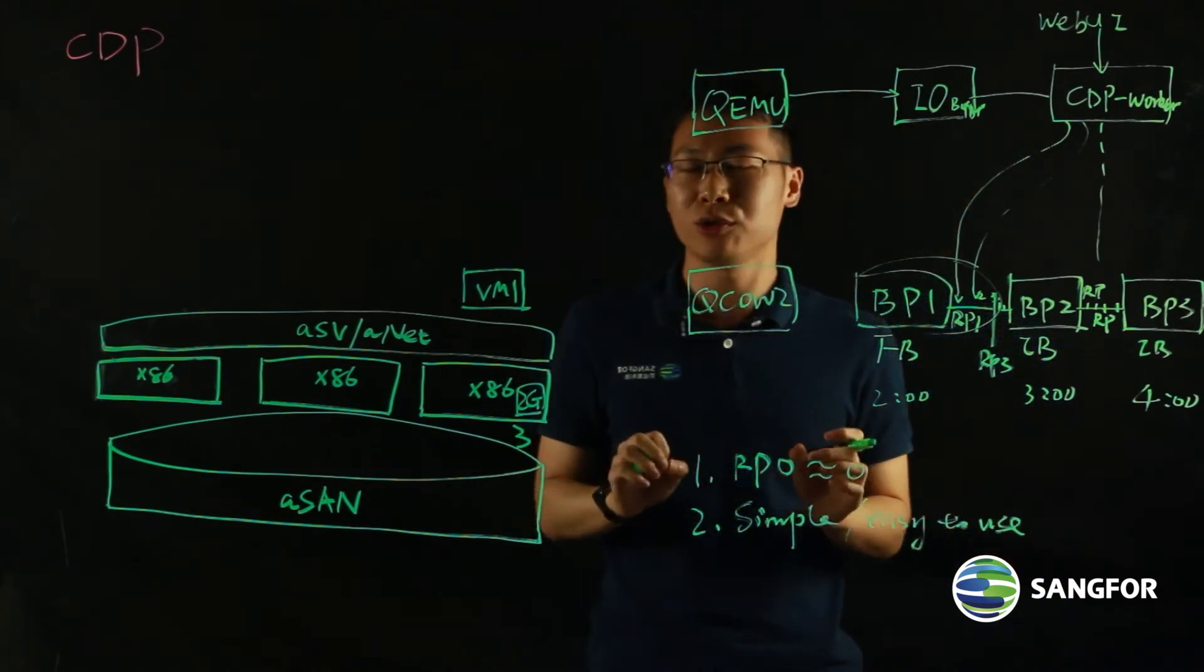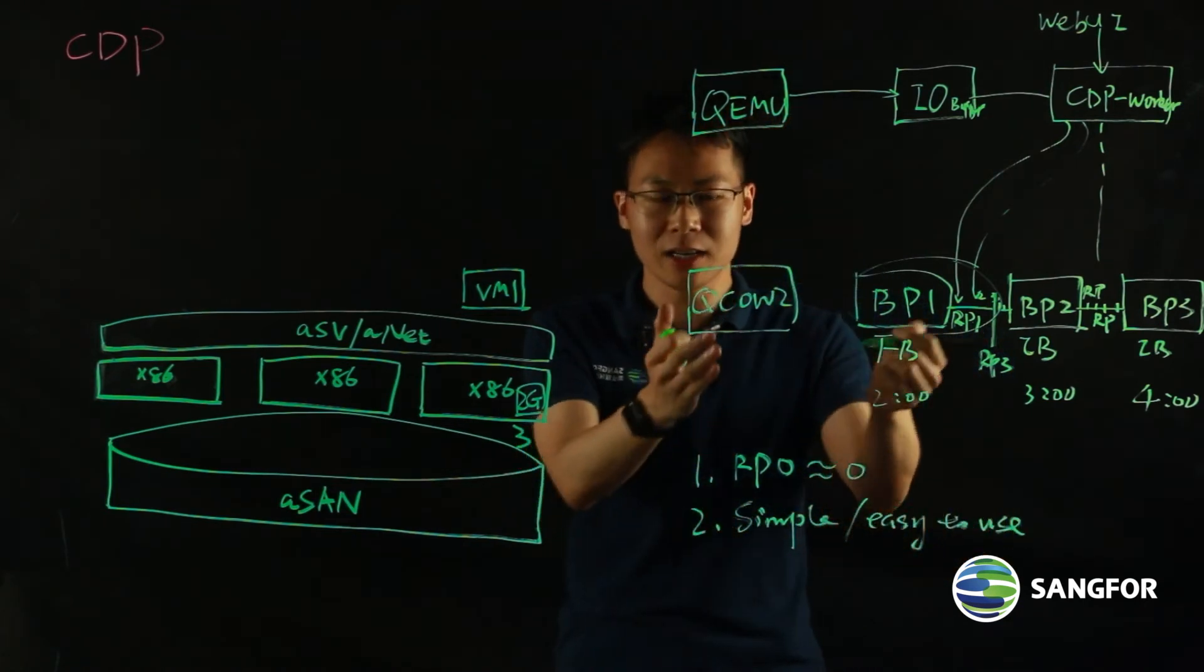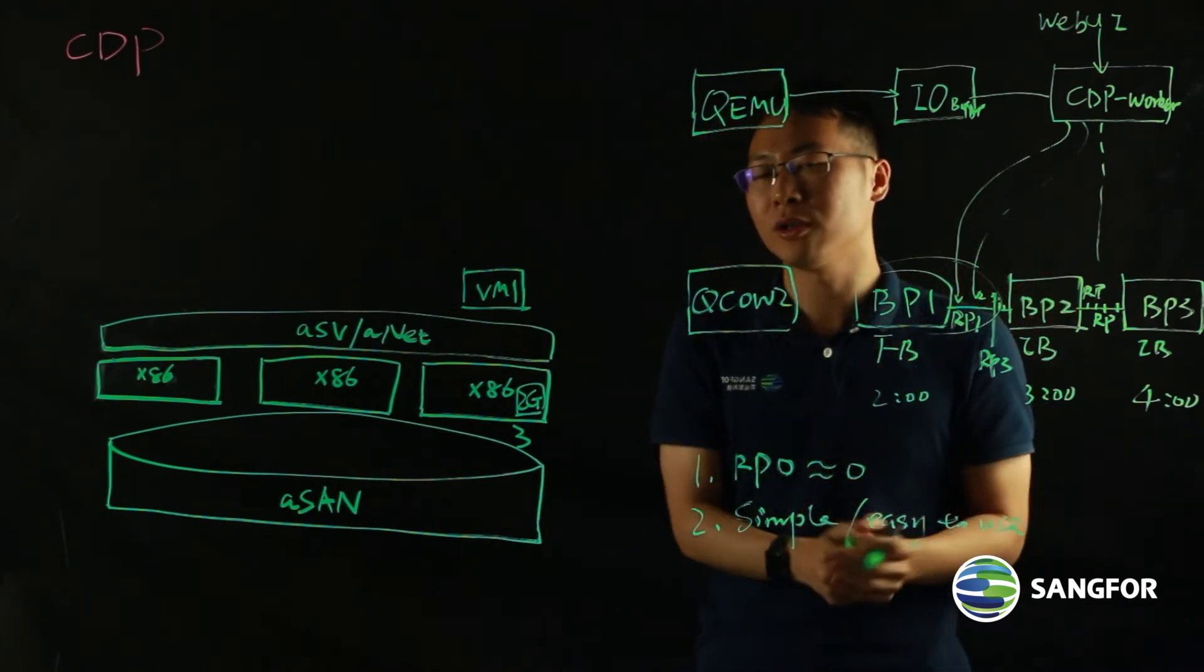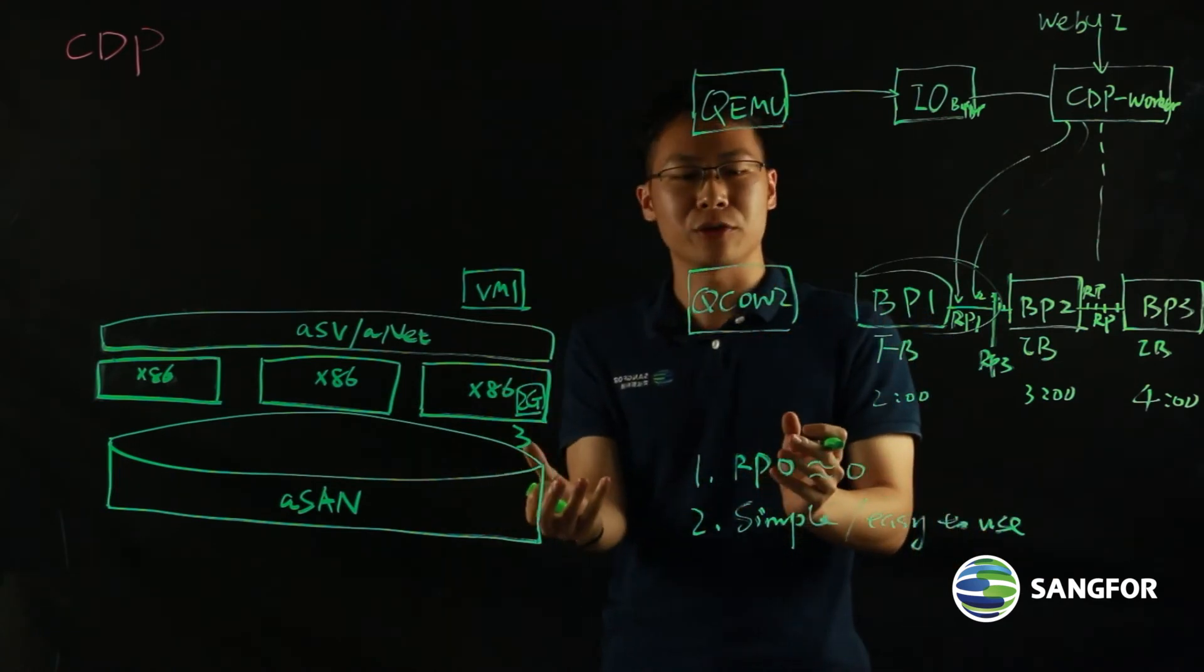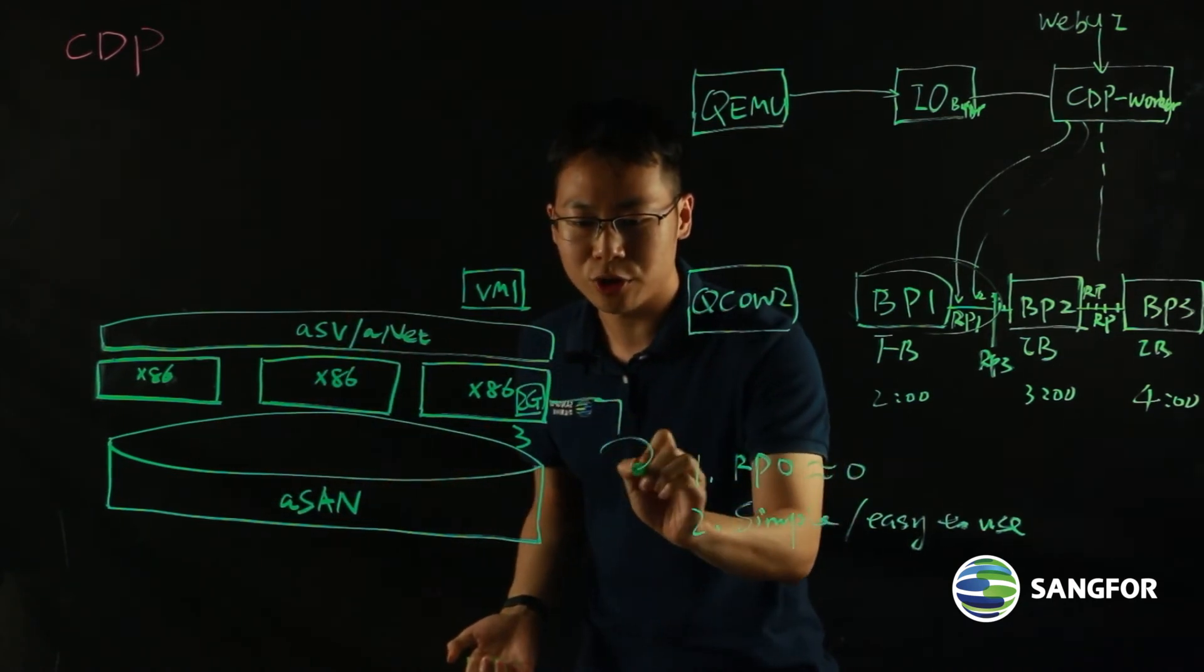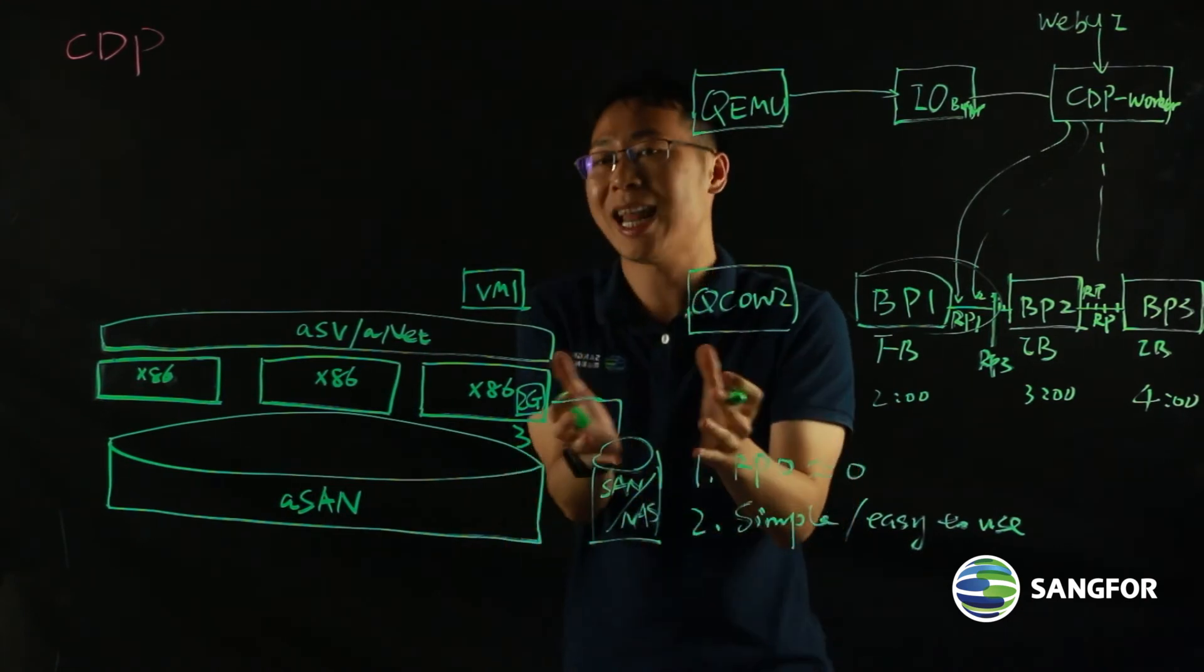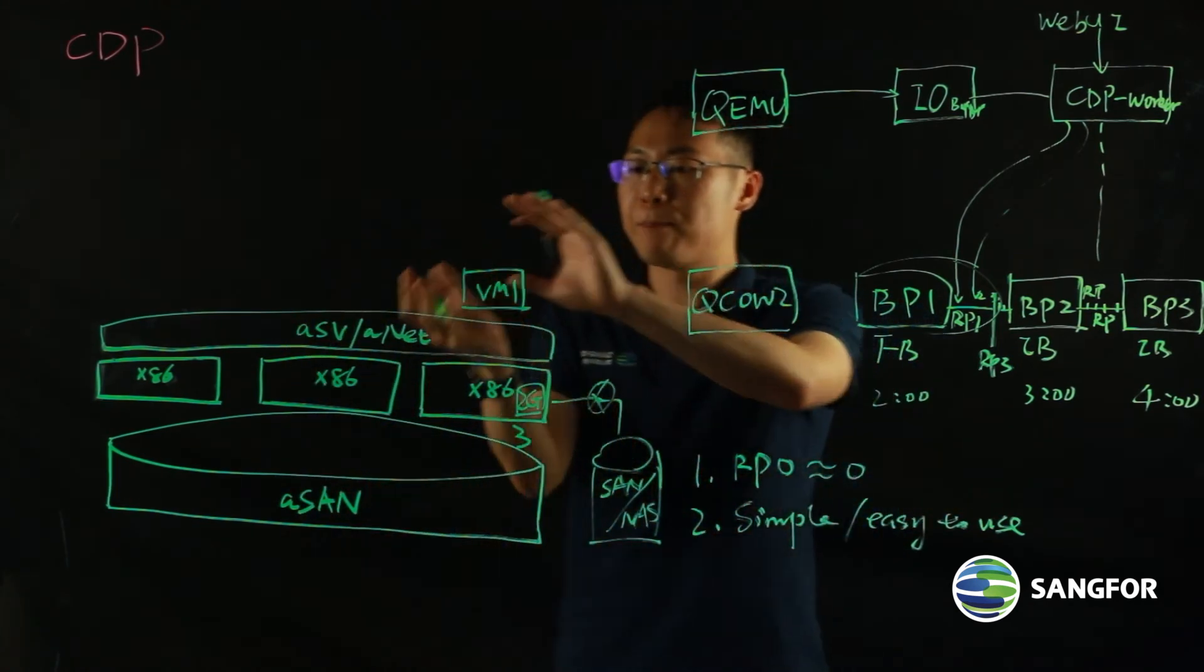But also there are some caveats we'd like to inform you if you want to apply CDP to your VMs. First is because CDP is leveraging both backup and IO log caching. So to avoid collision between the two files, we recommend you to separate the repository for the CDP IO log and backup files. So usually when you do backup or CDP, we will recommend you to deploy an external storage. This could be an external SAN storage or external NAS storage. That could be legacy storage.